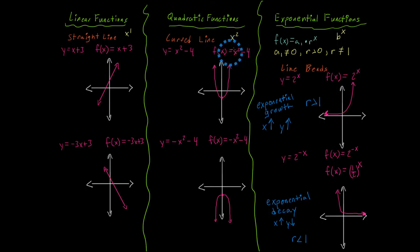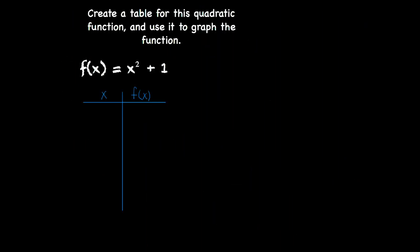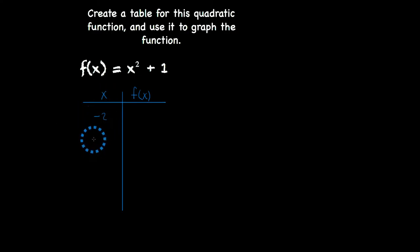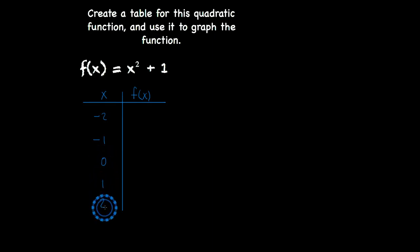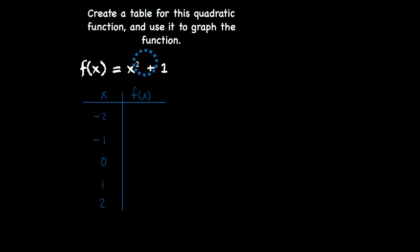So let's go ahead and jump into a couple of problems. I'm going to keep it simple. Let's say x is negative 2, negative 1, 0, 1, or 2. What I'm going to do is substitute these values in for the function.